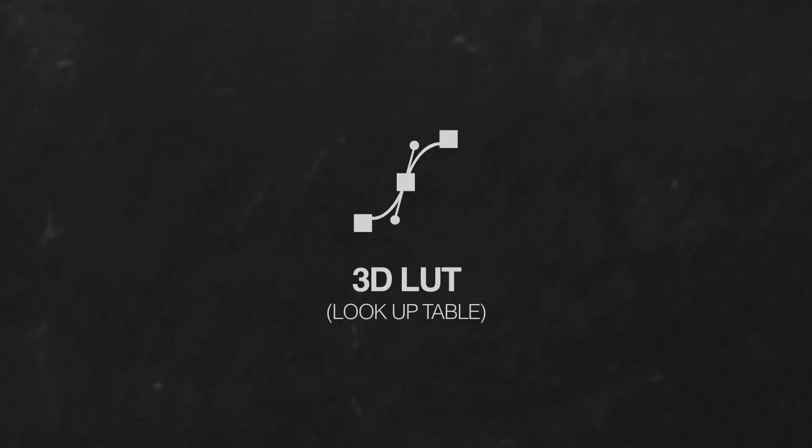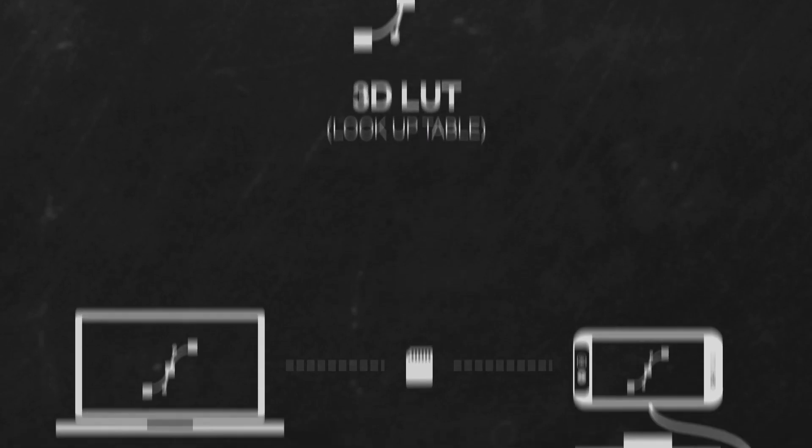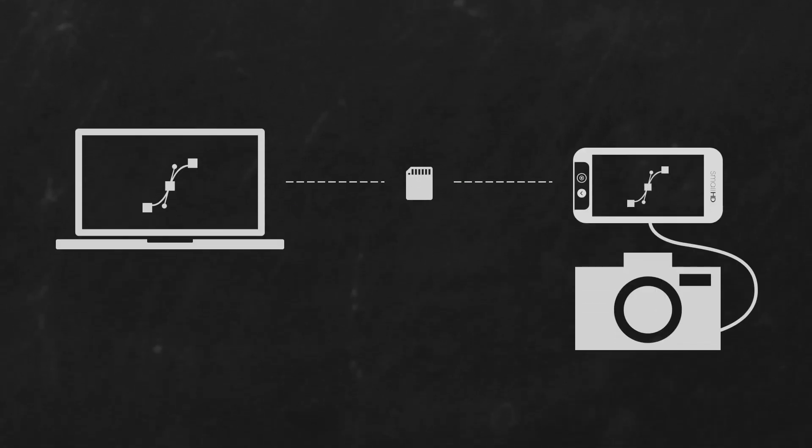Looks, also known as 3D LUTs or lookup tables, are small files that act like filters which you can apply both to your monitor while shooting and to your footage in post-production, integrating with most non-linear editors and color grading suites.